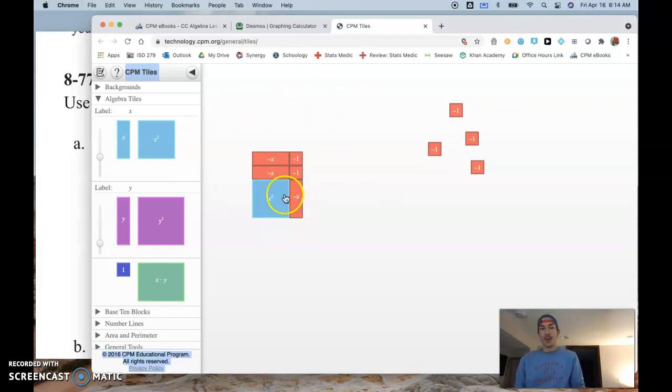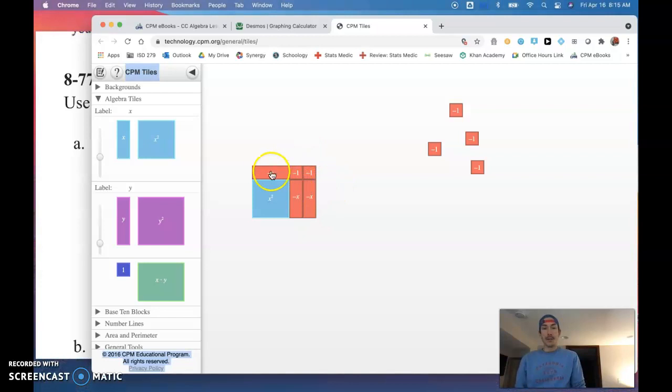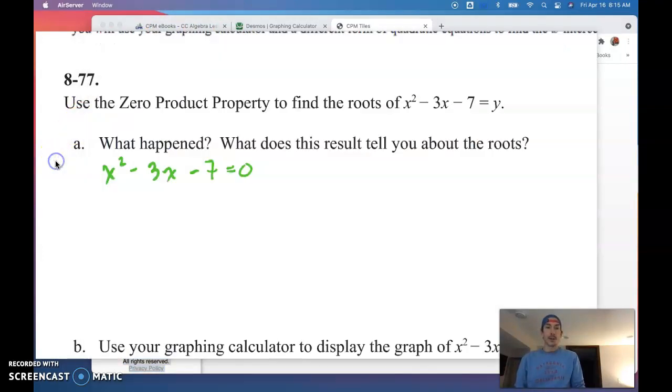And it doesn't matter if I drop this down here. It doesn't matter if I drag this over here and try to arrange these on the side somewhere. I'm not going to get a rectangle out of this with no gaps and no overlaps. So we run into a situation here. The answer to the what happened is I couldn't build the rectangle. And what does that mean? It tells me that my equation, my trinomial expression, is not a factorable one. So this means we've got to come up with an alternative method for solving, for finding the roots.